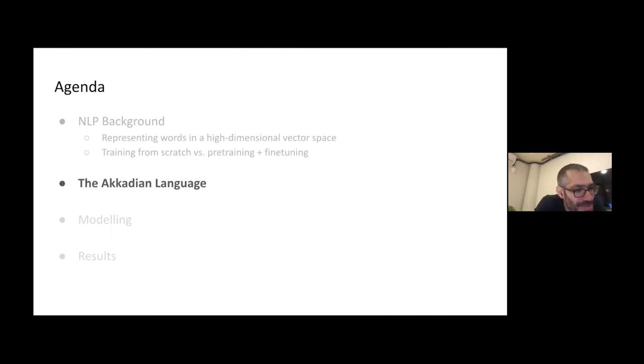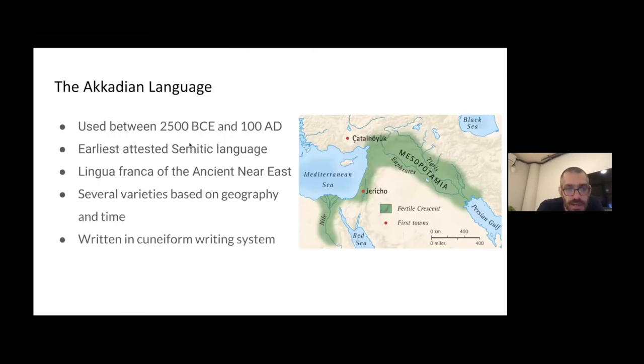Let's get back to our scenario of working on the Akkadian language. The Akkadian language was spoken 2500 BCE to around 100 AD. It was spoken around 2500 years. It's the earliest attested Semitic language, the earliest language that we have some records for. It was the lingua franca of the ancient Near East, much like our English today. There's a lot of varieties that shift around based on geography and time. It was written in a cuneiform writing system.